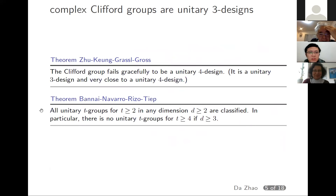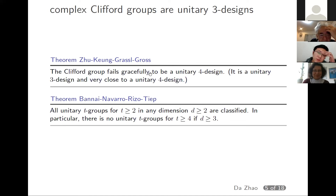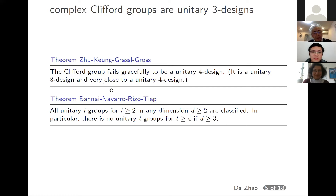The complex Clifford groups are already good in the sense that they are already unitary 3-designs. This was investigated by Zhu, Kueng, Grassl, and Gross, who published a paper on arXiv showing that the complex Clifford group fails to be a unitary 4-design. This means it is a unitary 3-design but only very close to a unitary 4-design.